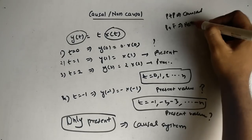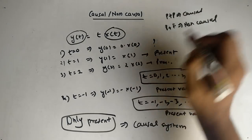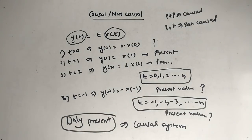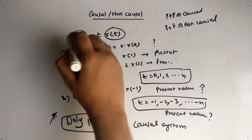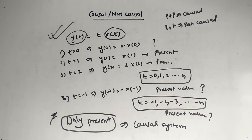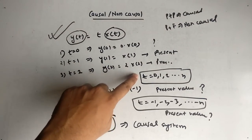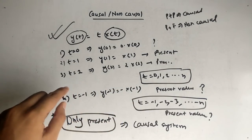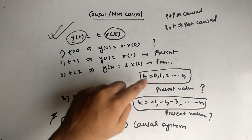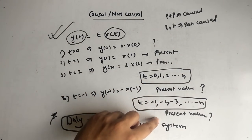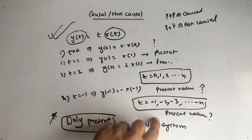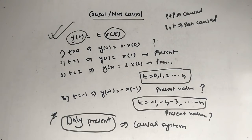But this is the unique case, and therefore this function y(t) = t·x(t) is very important. In this function we get only the present value — you can put any positive or negative value and you will always get the present. There will be no past and no future. So if the system has only present value, it is a causal system.